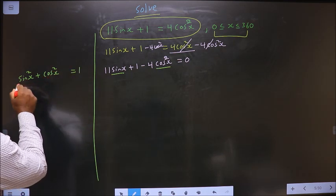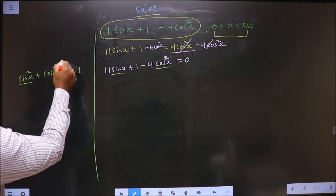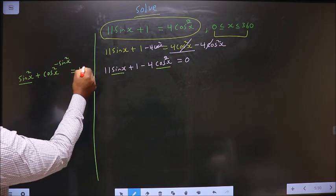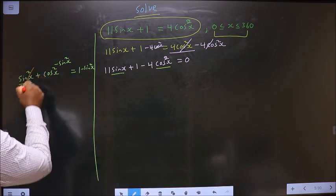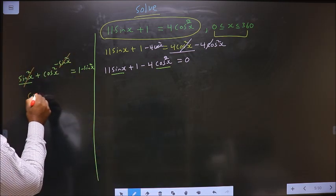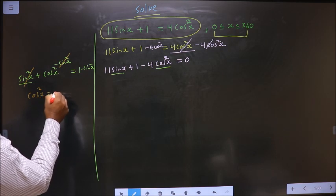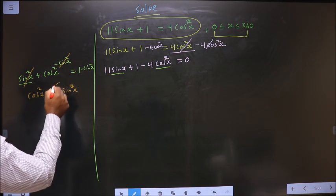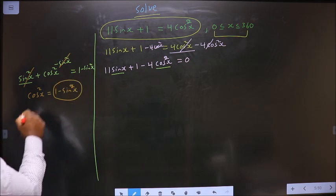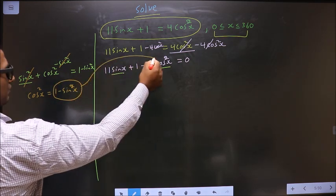You want cos square, so to remove sin square, you subtract sin square x on both sides. So we get cos square x equal to 1 minus sin square x. Now, in place of cos square x, I put this over here.